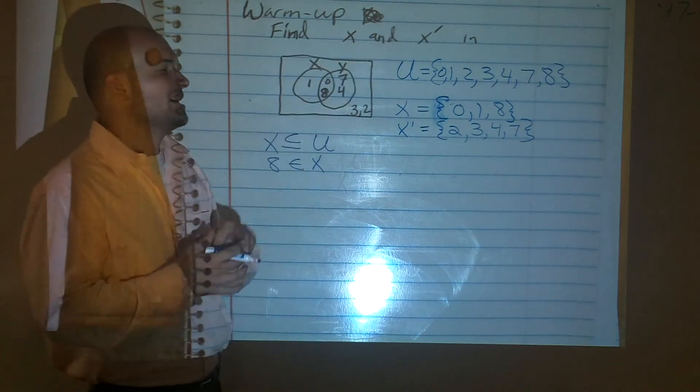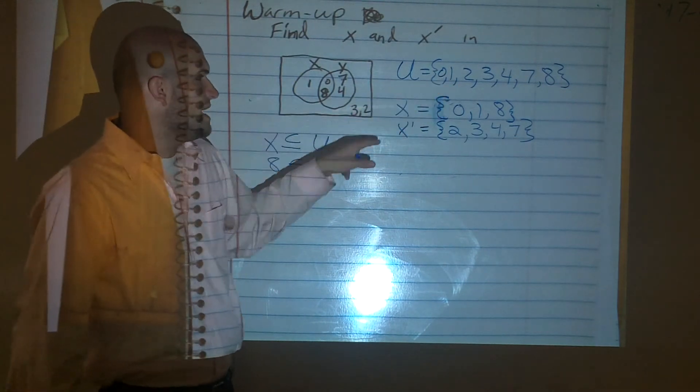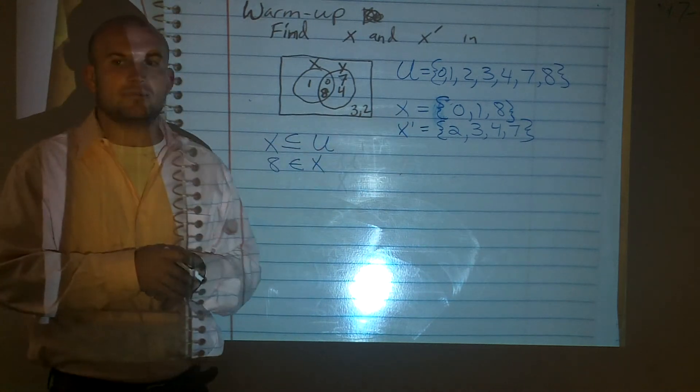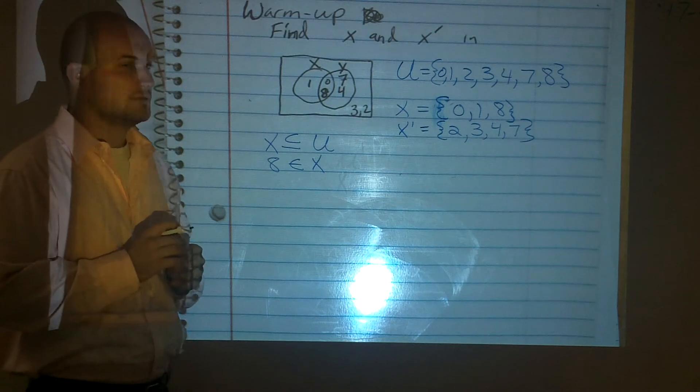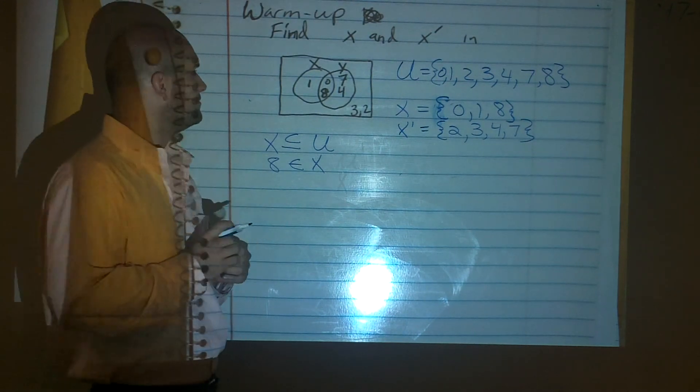So when you need to find the x and the x complement or x prime, make sure you first find your universal set, find what x is, and then you can go ahead and find what your x complement is. Yes? Let's do another one with a little prime comment center. All right. Yes, we will do another one.